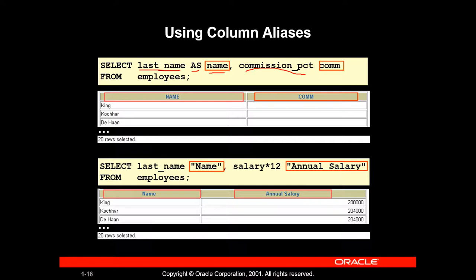What is the output? The output is to keep the name as the column heading in capital letters. In this example, we have to do this.